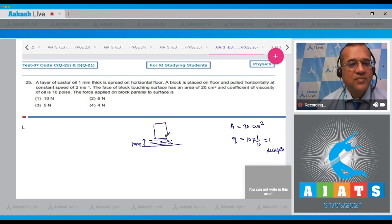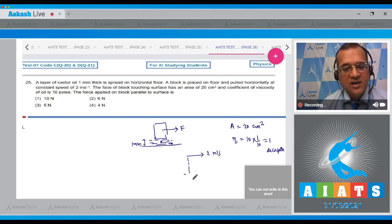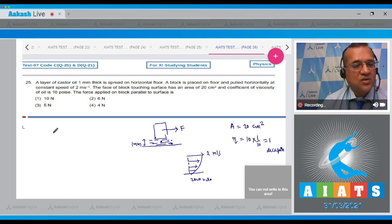The force applied. So when you apply the force on this one, then the layer is also pulled with the same velocity 2 meters per second. So you see that this layer is being pulled with the speed of 2 meters per second and the bottom of the layer is at rest. So this is zero velocity.